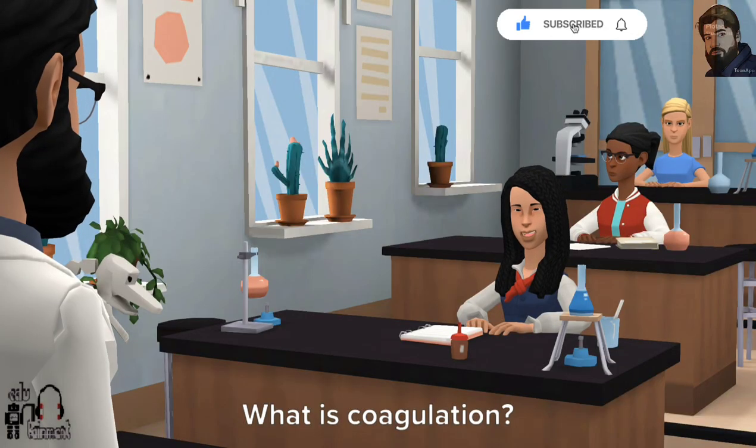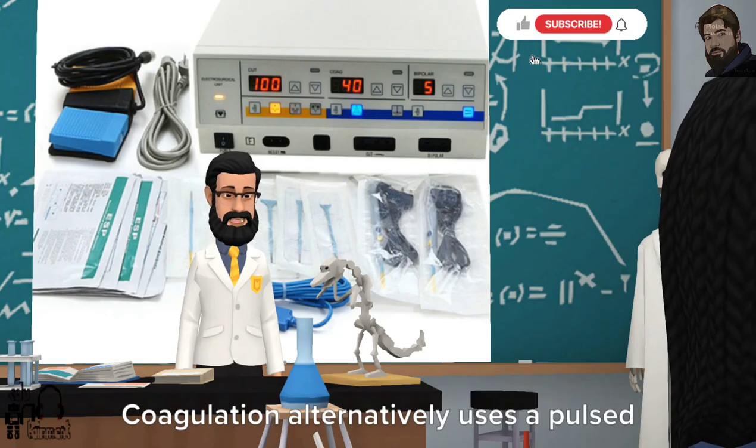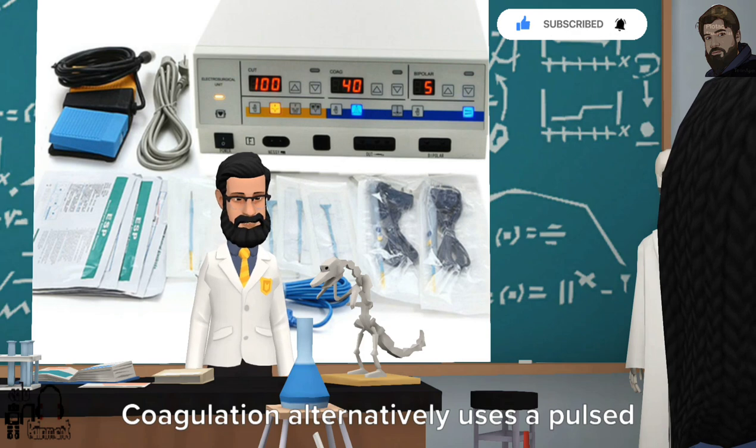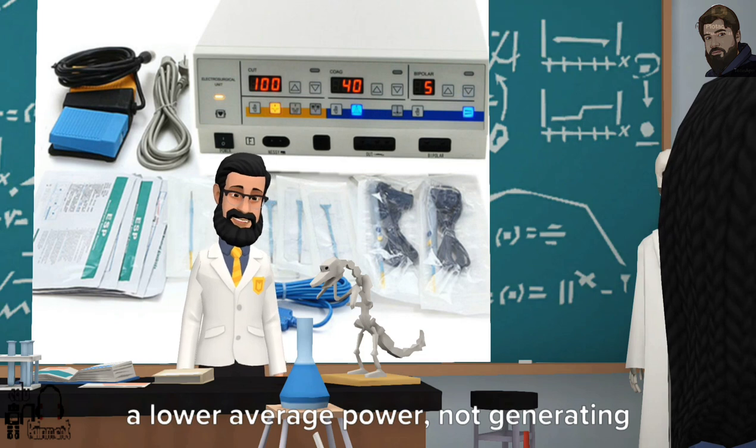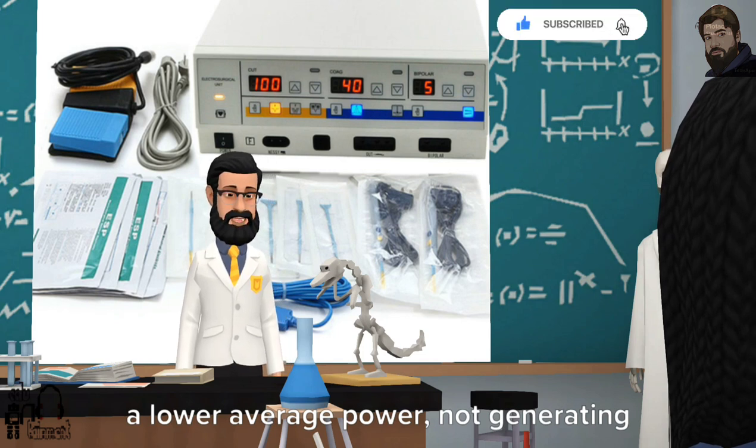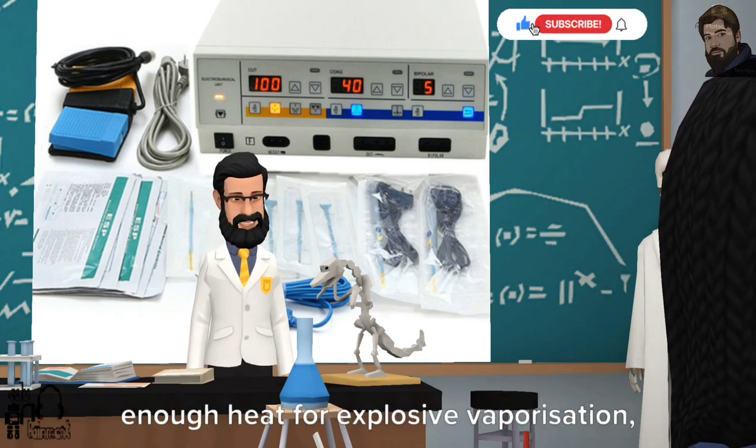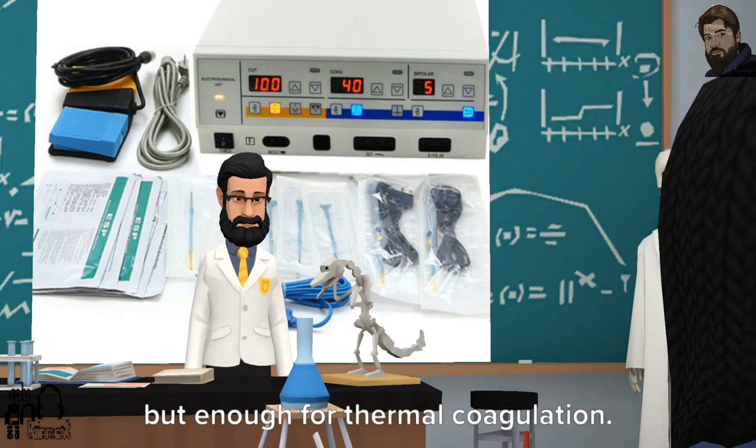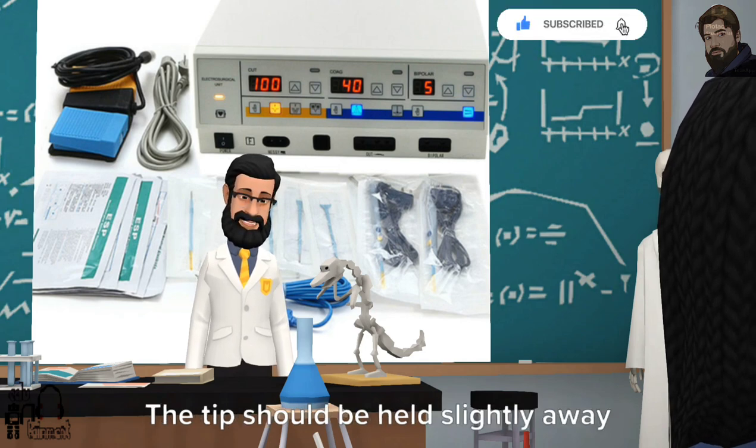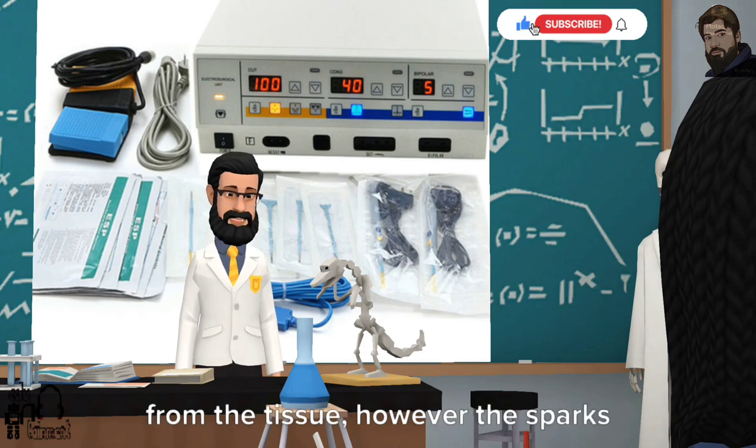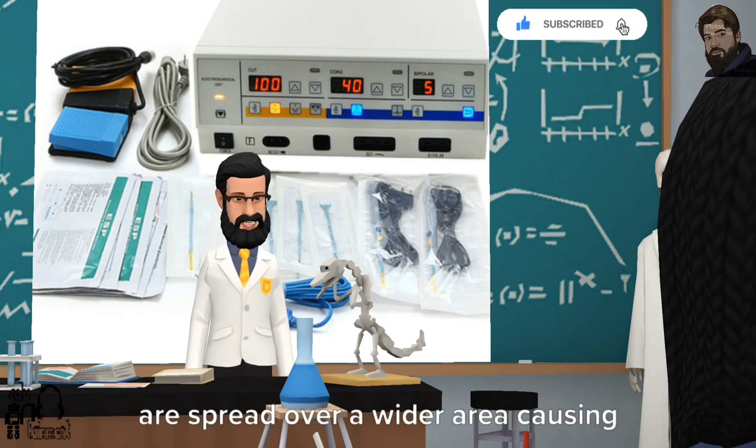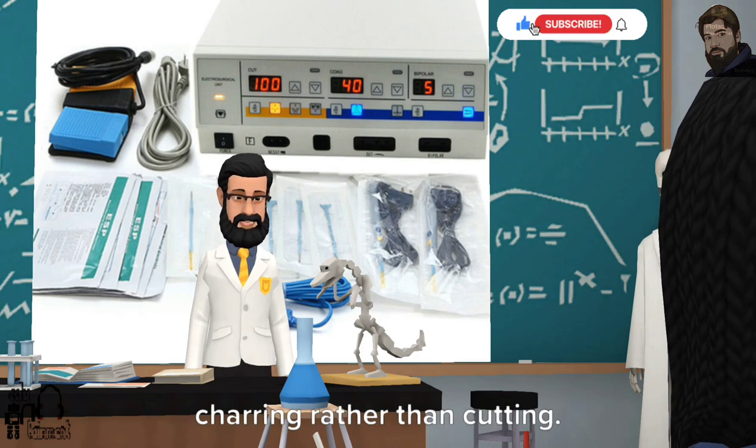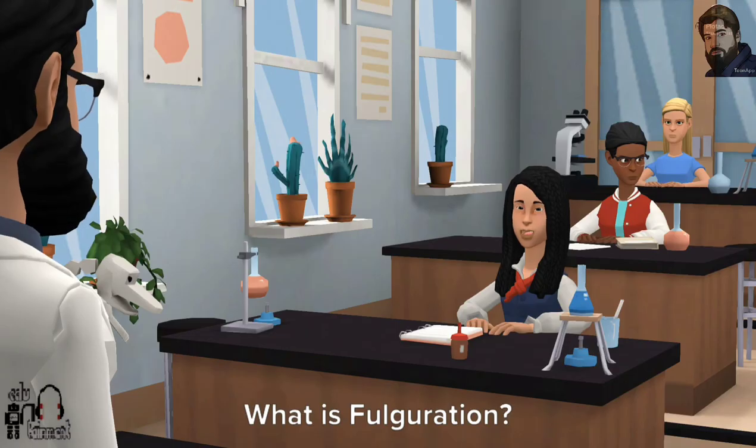What is coagulation? Coagulation alternatively uses a pulsed waveform with a high voltage. In coagulation, the waveform is at a lower average power, not generating enough heat for explosive vaporization but enough for thermal coagulation. The tip should be held slightly away from the tissue, however the sparks are spread over a wider area causing charring rather than cutting.